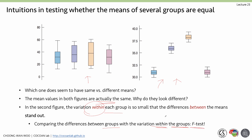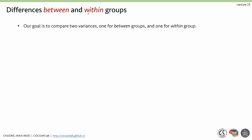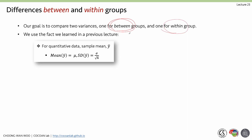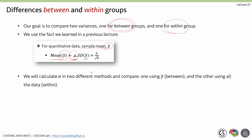That is basically the F-test — how we compare the differences between and within groups. Our goal is to compare two variances: one for between-group and one for within-group. Using the fact that for a quantitative data sample, the sample mean ȳ has mean equal to population parameter μ, and the standard deviation of the sampling distribution is σ divided by √n, we can calculate sigma in two different ways and compare them.